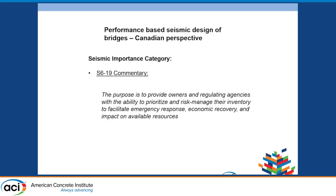The three importance categories are very similar to what AASHTO has. The purpose is to provide owners and regulating agencies the ability to prioritize and risk manage. The idea is to facilitate emergency response and recovery, and figure out the impact on available resources.